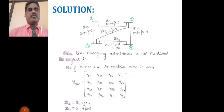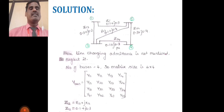Y_bus equals the 4×4 matrix: y11, y12, y13, y14; y21, y22, y23, y24; y31, y32, y33, y34; y41, y42, y43, and y44. The total number of buses is 4, so the matrix size is 4×4.